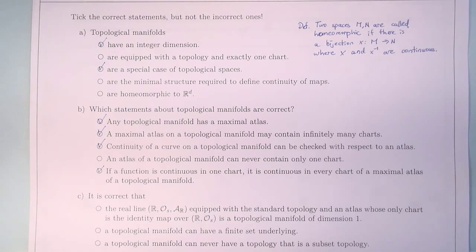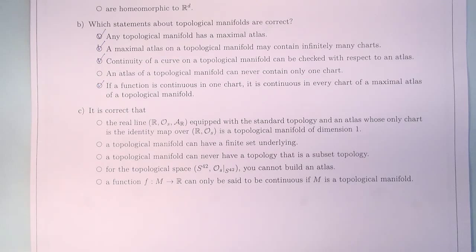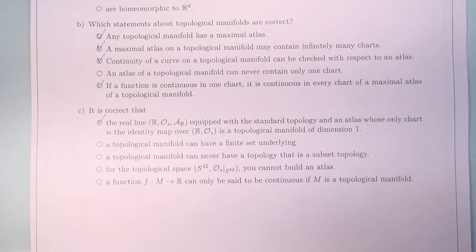But we need to restrict ourselves to charts that overlap each other. The last question here, part C: it is correct that the real line R, equipped with a standard topology and an atlas whose only chart is the identity map over the topological space R, is a topological manifold of dimension 1. This is correct. This is an example for an atlas of a topological manifold that contains exactly one chart.